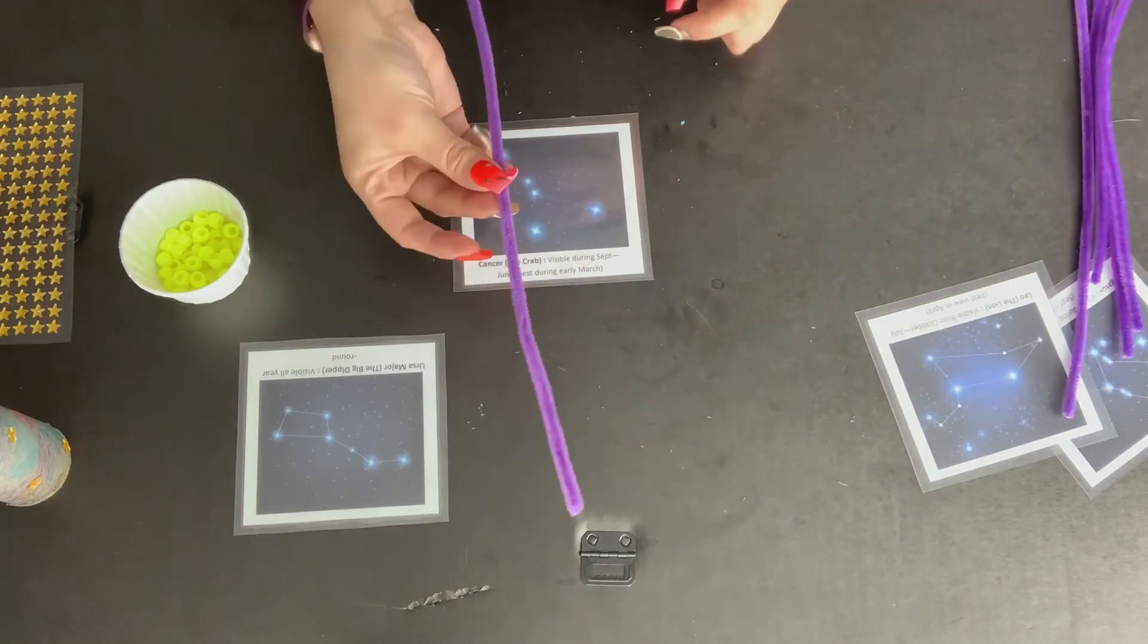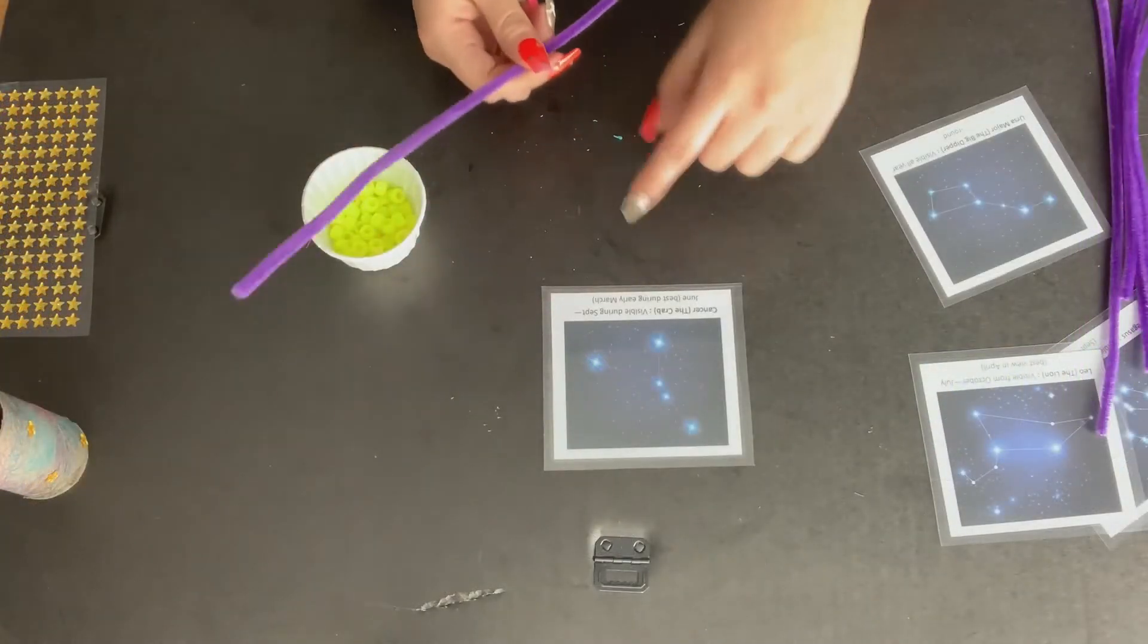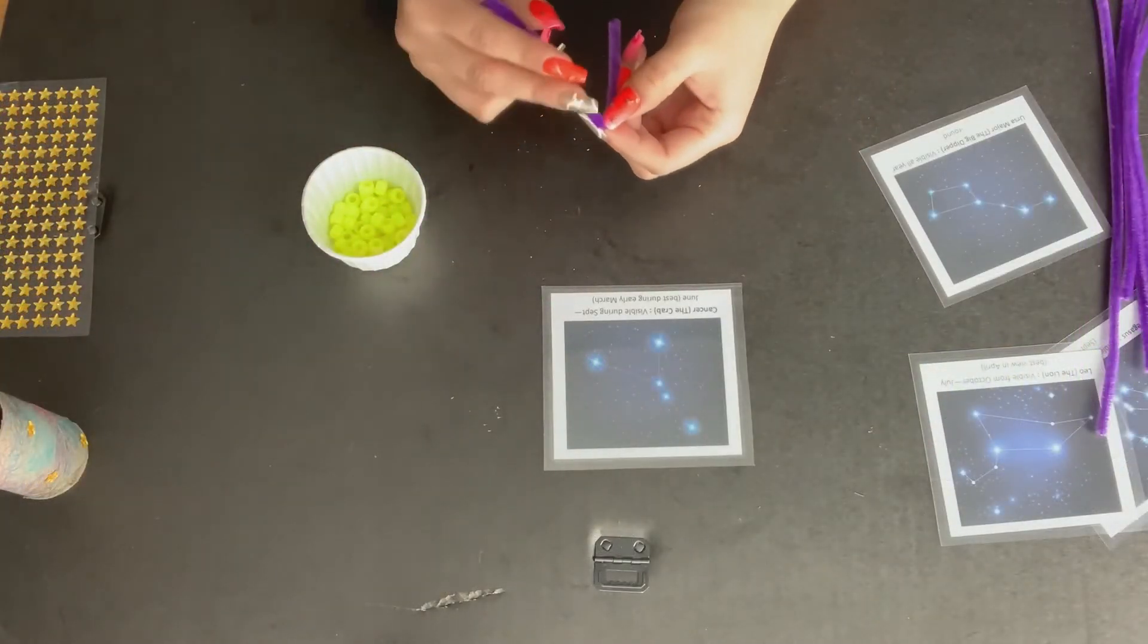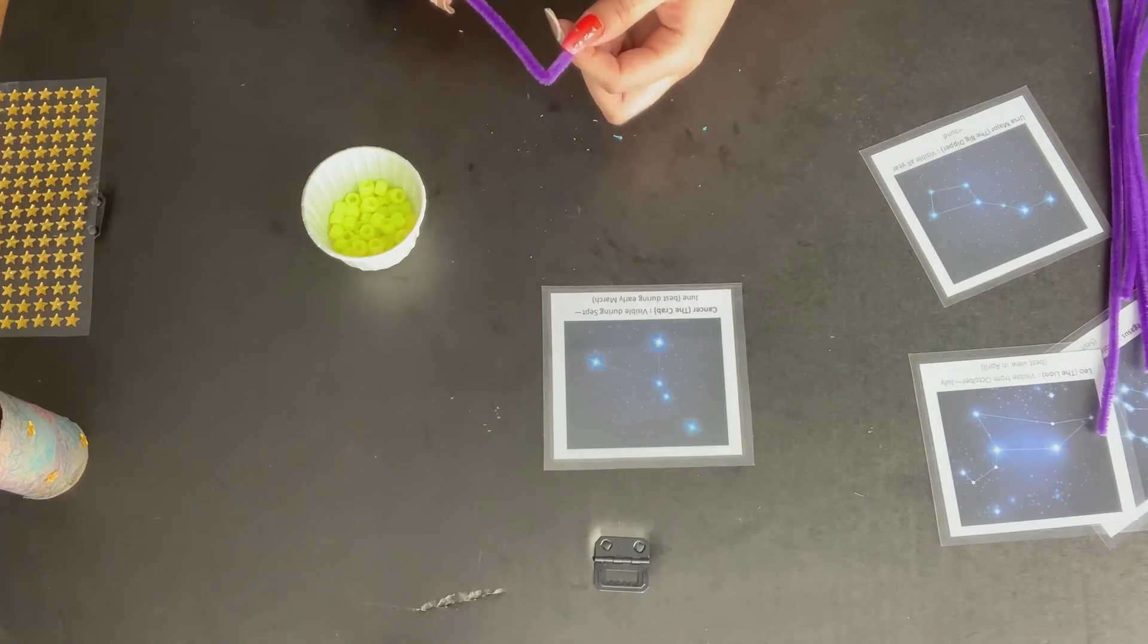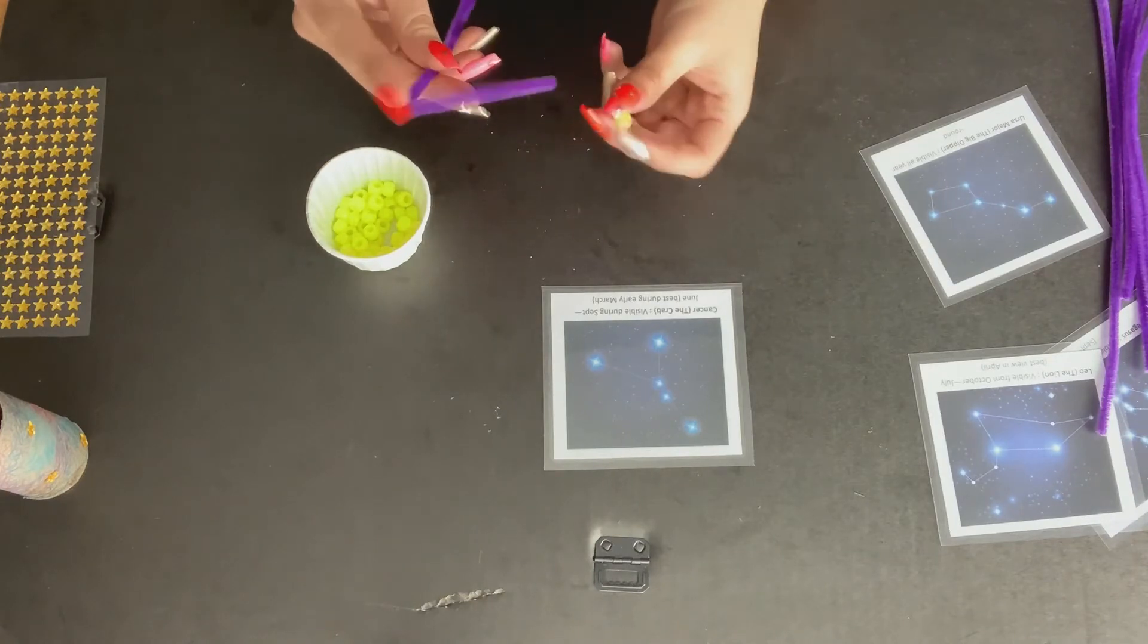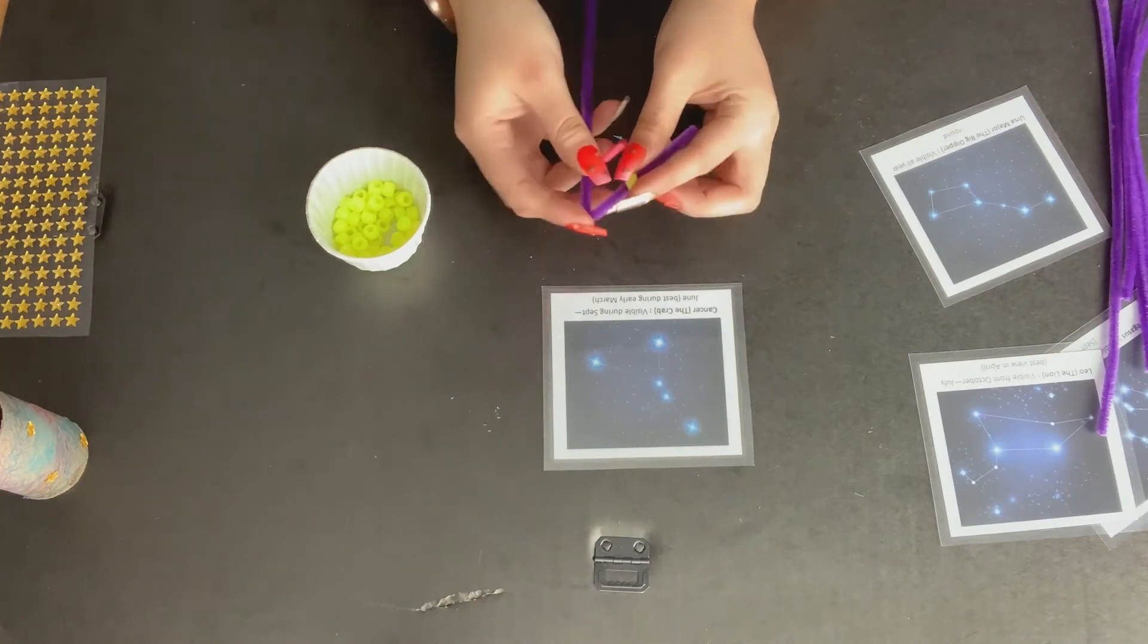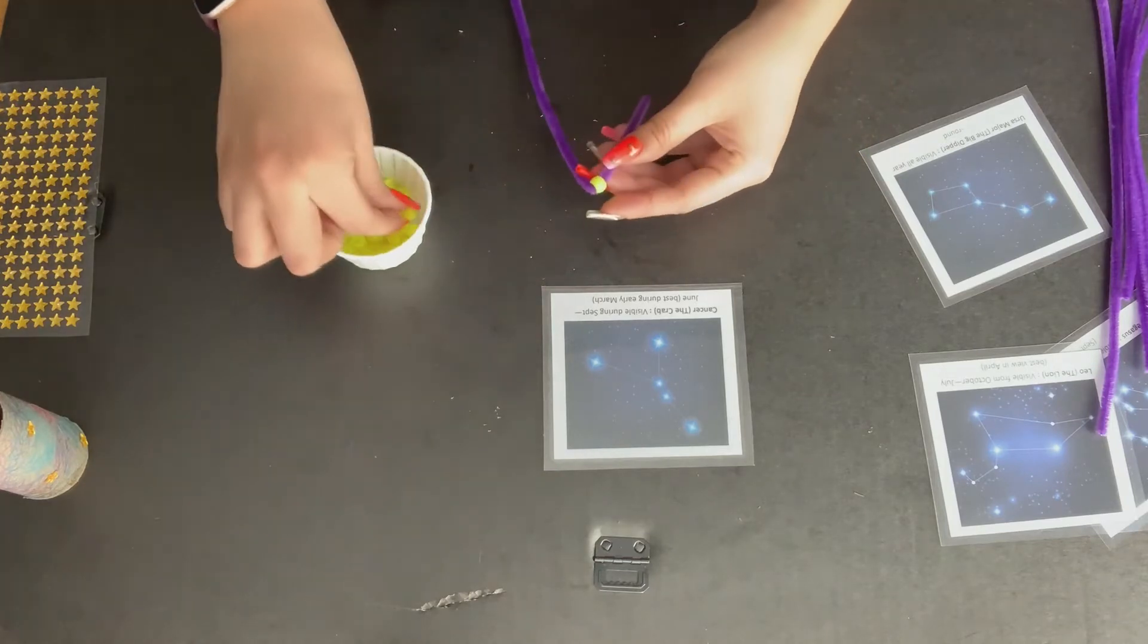So I'm going to take my pipe cleaner and I'm just going to look at the shape of our constellation. The lines are traced for you, but in the sky you don't see lines. So when we're looking to the sky for these constellations, we'll need to look very closely at the position of our stars, because there's going to be no lines for us to see.